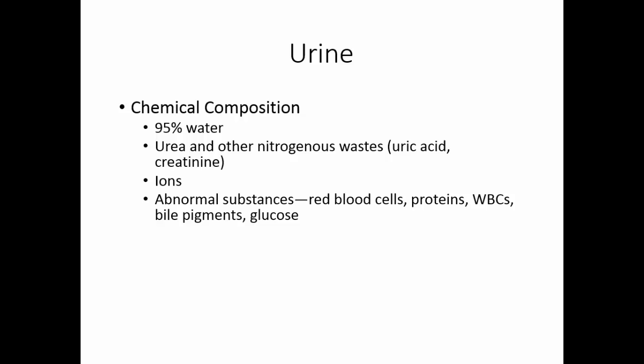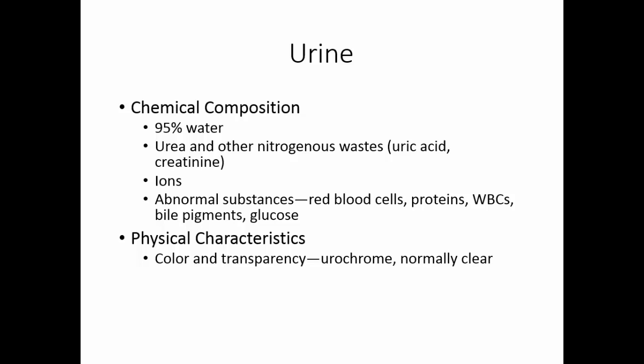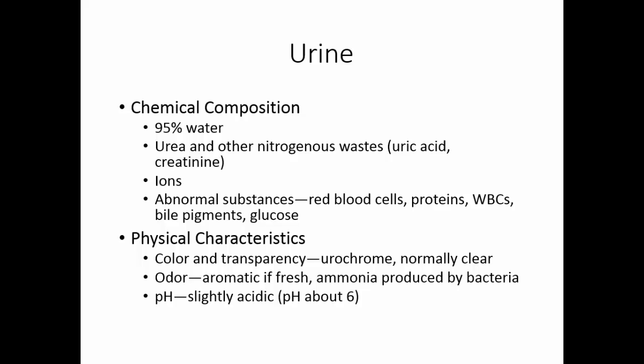Things that should not be in the urine — abnormal substances — include red blood cells, proteins, white blood cells, biopigments, and glucose. In terms of physical characteristics, urine is normally clear and has a pale yellow color due to the pigment urochrome. Fresh urine doesn't smell that bad; however, if it sits for a while, bacteria may produce ammonia and that's what gives it the unpleasant odor. Urine is normally slightly acidic with a pH of about 6, and it is a little denser than water. Normal specific gravity for urine is 1.001 to 1.035.